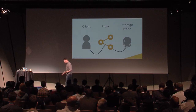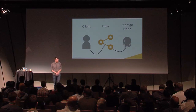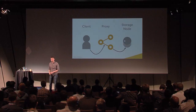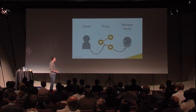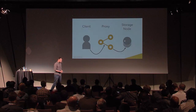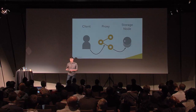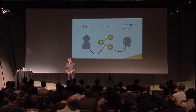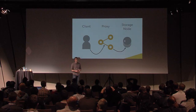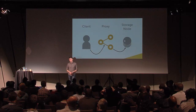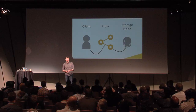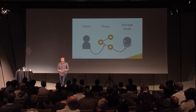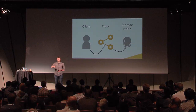Here are the basic parts of Swift — it's a very simple diagram. The user talks to a proxy server; proxy servers talk to storage nodes. The proxy server is responsible for handling user requests, implementing most of the API, and coordinating all communication with the storage nodes. The proxy server doesn't have any storage itself — no drives attached to it. Really, it's shuffling packets and making sure that failure scenarios in the cluster are handled.